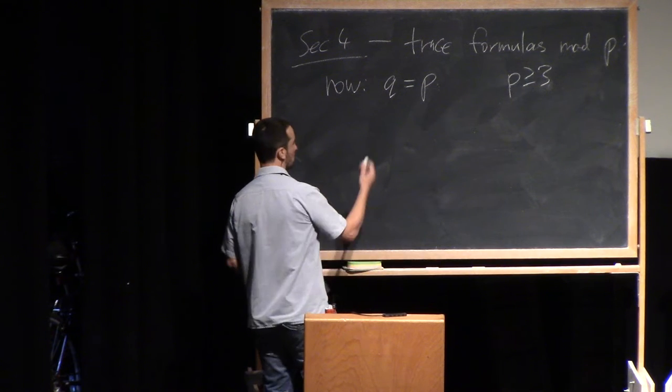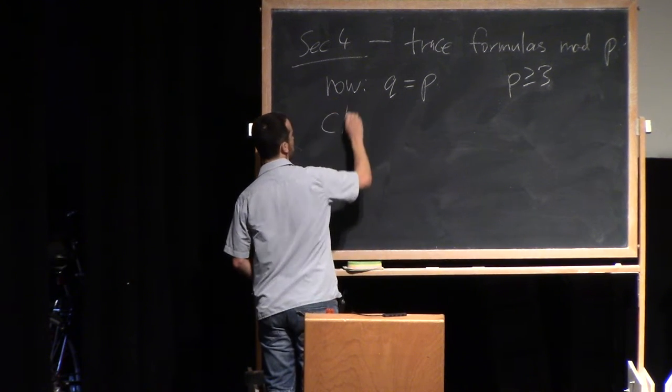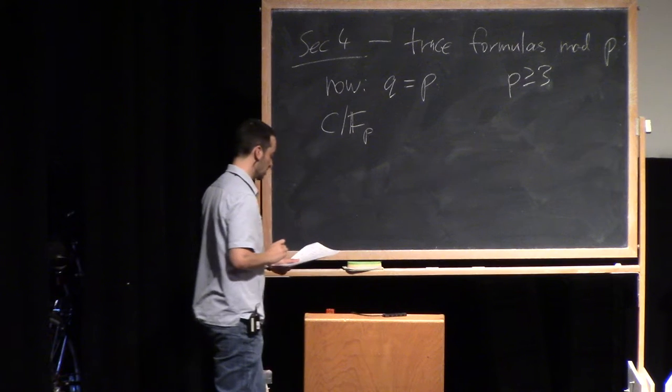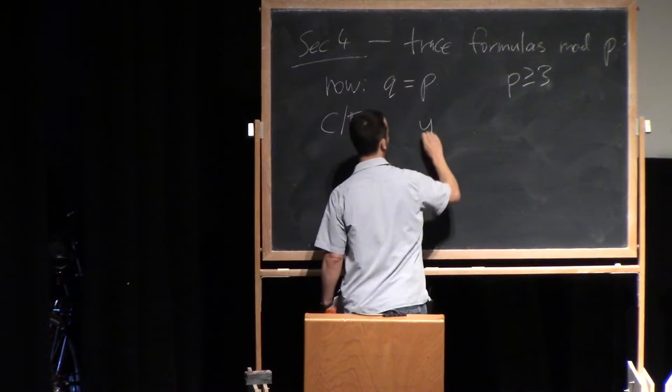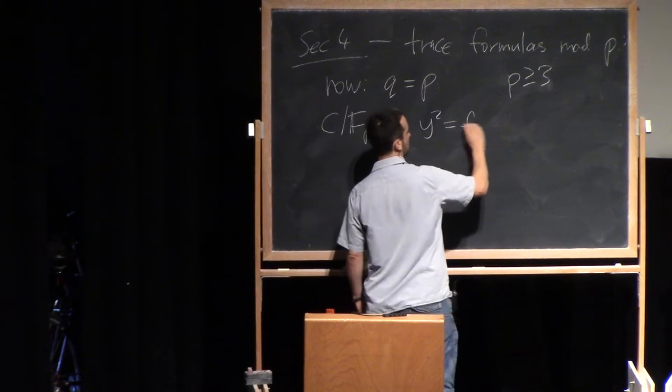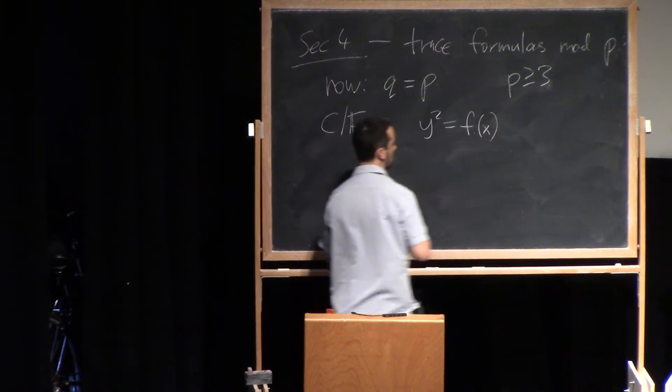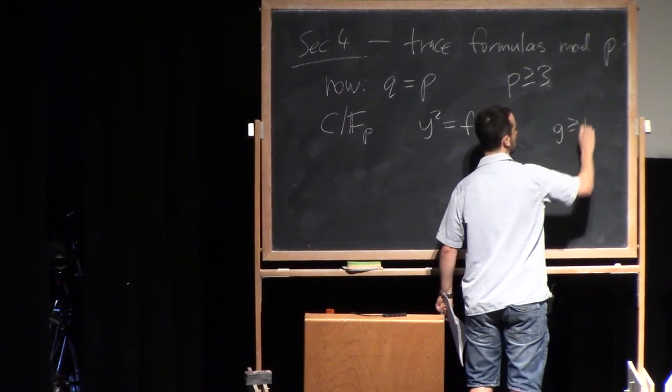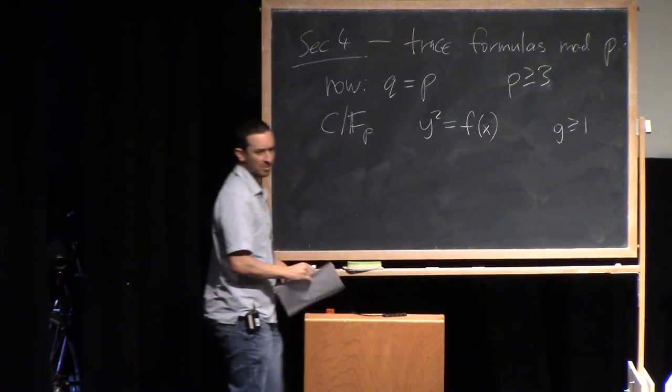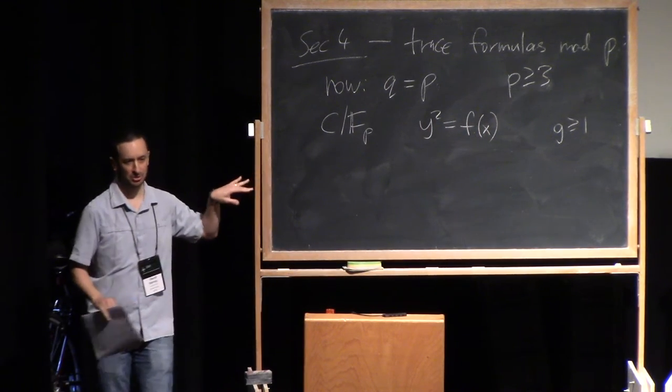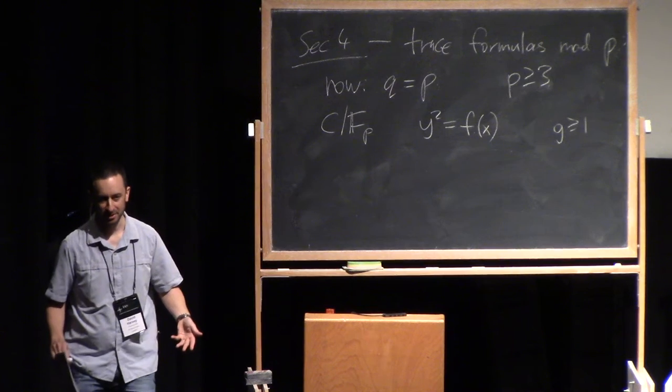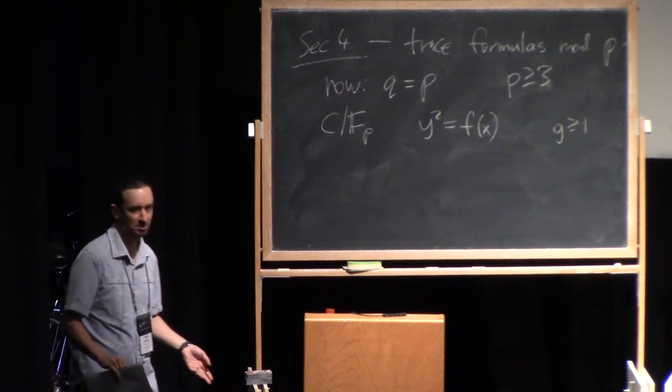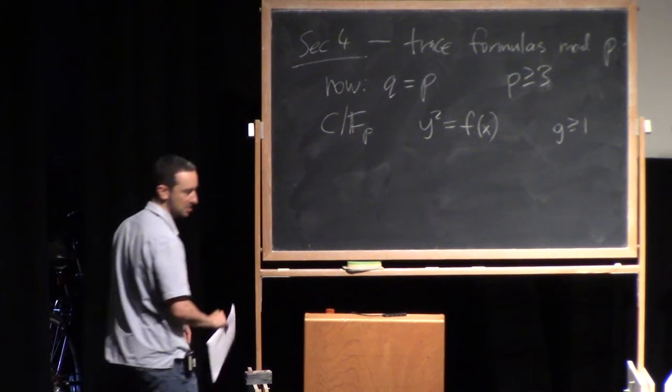Okay, so the situation is we have a hyperelliptic curve C over F_P. Y squared is F of X. And the genus, at least one. So whenever I write this, you should just assume that F is square free of degree 2G plus 1 or 2G plus 2. That's the standard setup for the rest of the course.